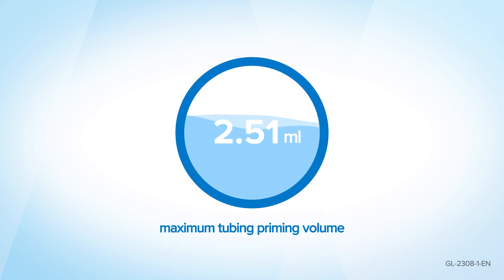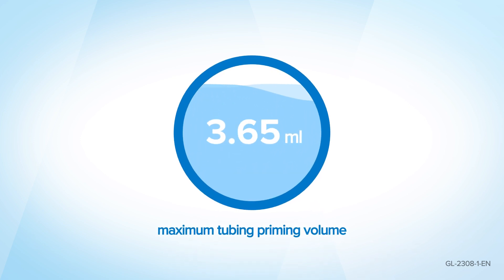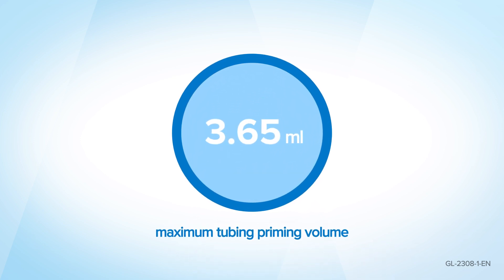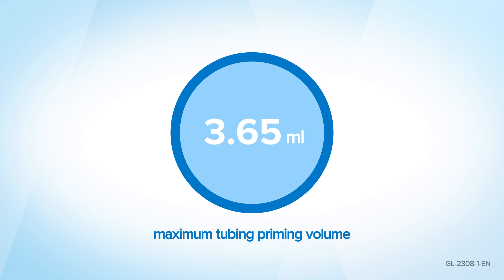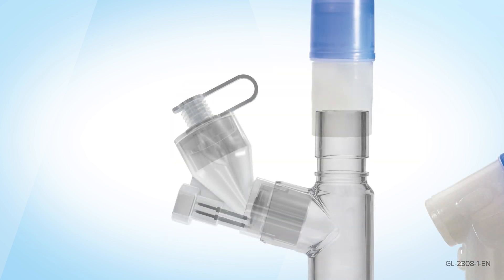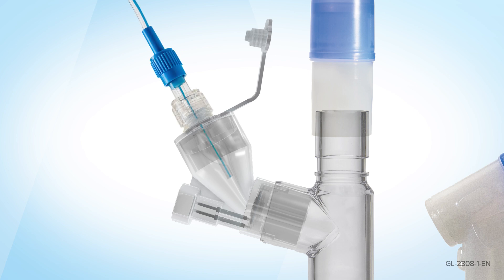Ensure proper orientation of the Aerogen Solo as it is gravity fed. Open the plug on the Aerogen Solo — do not remove the plug. Screw the blue CNTS tubing connector onto the top of the Aerogen Solo.